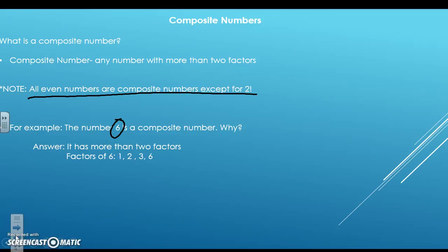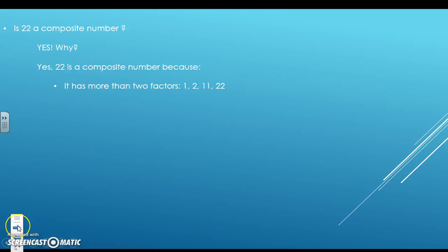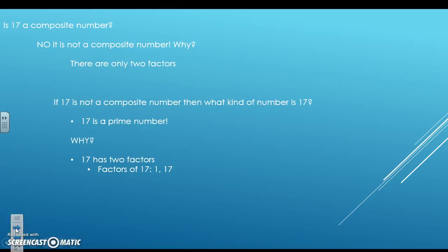6 is a composite number because it has more than two factors. The factors of 6 are 1, 2, 3, and 6. 22 is a composite number because it has more than two factors. 17 is not a composite number. There are only two factors in 17, right? The factors are 1 and 17.